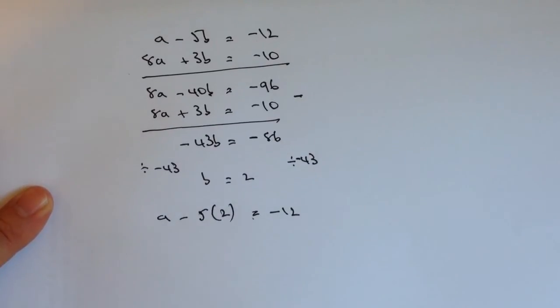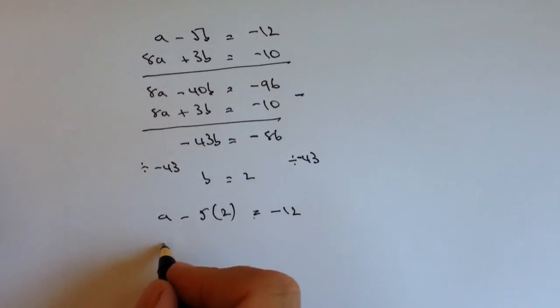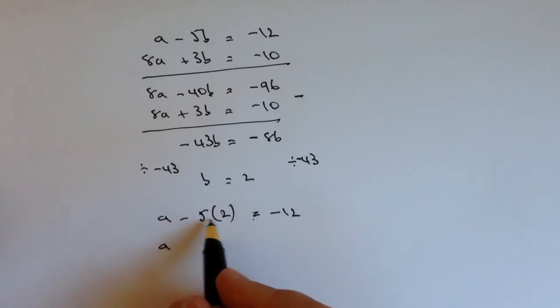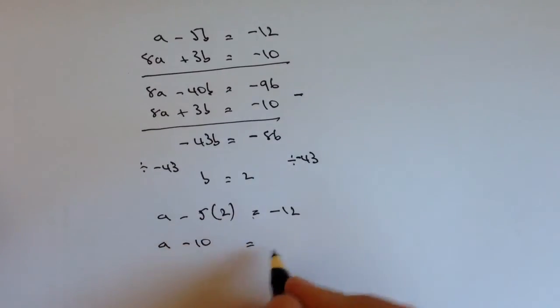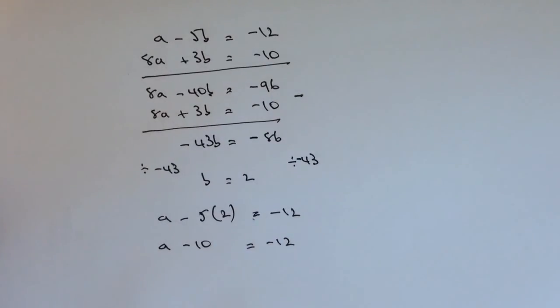Okay, so let's just calculate that out. And I've got a, and I've got -5 times 2. Well, that's -10. And that equals -12.